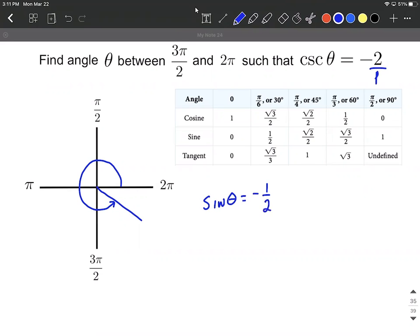Now sine has to be negative because it's in the fourth quadrant right between three pi over two and two pi. According to all students take calculus, only cosine and its reciprocal secant are going to be positive in the fourth quadrant.